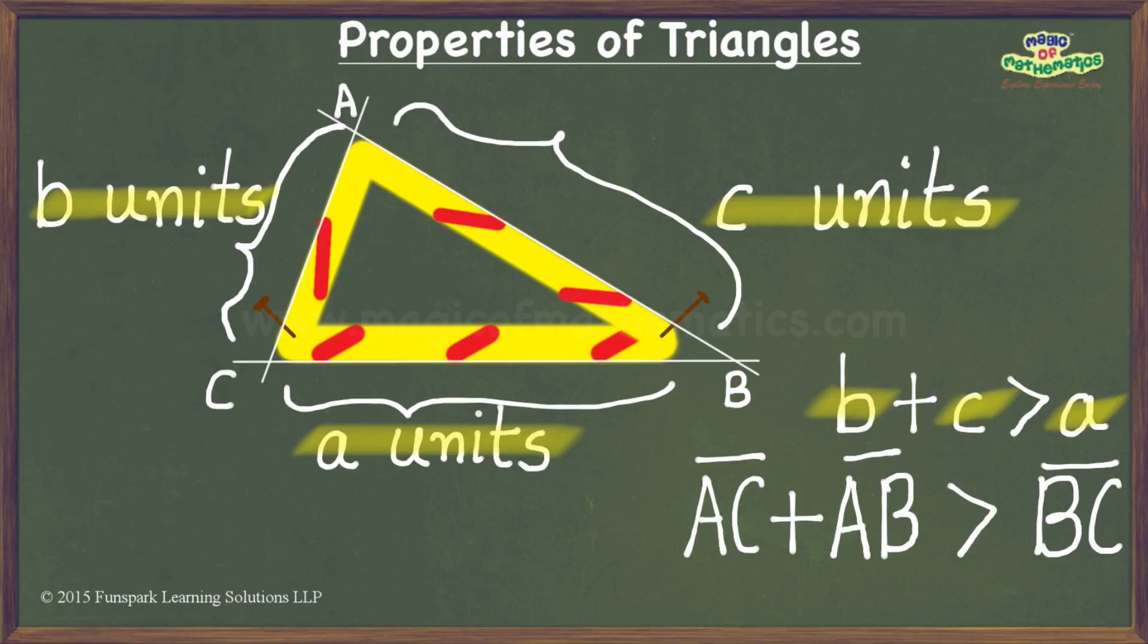We have shown here that the sum of the length of two specific sides of this triangle namely side AC and side AB is greater than the length of the third side namely BC.